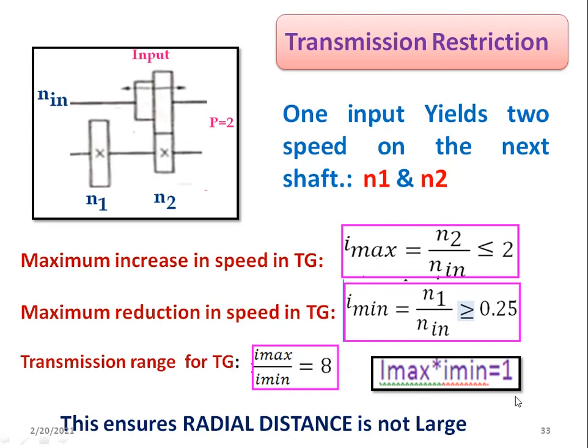This transmission restriction ensures the radial distance in the gearbox is not excessively large. If you design a machine tool gearbox beyond φ⁸ — that is, beyond the transmission range where I_max / I_min exceeds 8 — the radial distance becomes uncontrolled. Therefore, when designing any machine tool gearbox, you must respect the transmission restriction: I_max / I_min ≤ 8, or φ⁸, to keep the radial distance within acceptable limits.